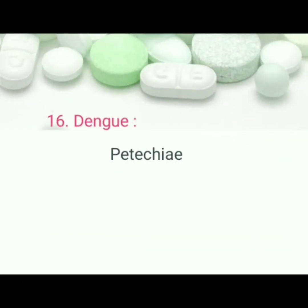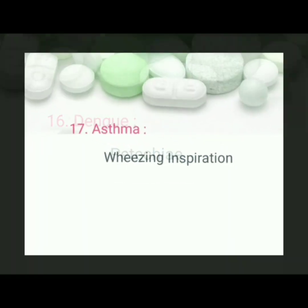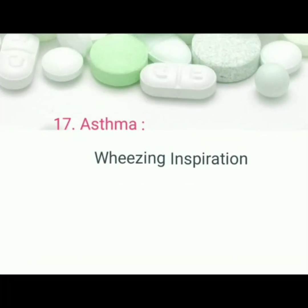Dengue: pathognomonic sign is petechiae. Asthma: pathognomonic sign is wheezing on inspiration.